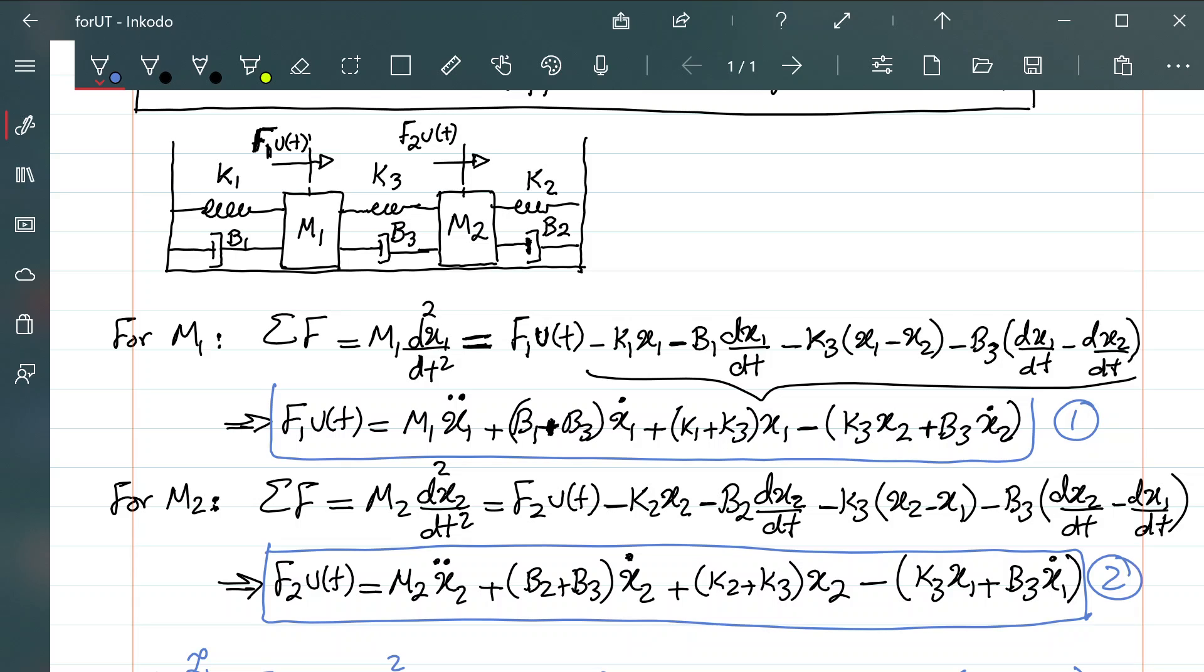So, taking equation 2, applying Laplace transform, f2 over s equals m2 s square x2 of s, plus (b2 + b3) s x2 of s, plus (k2 + k3) x2 of s, minus the same thing we have here, except it is for the first mass, so x1 of s.